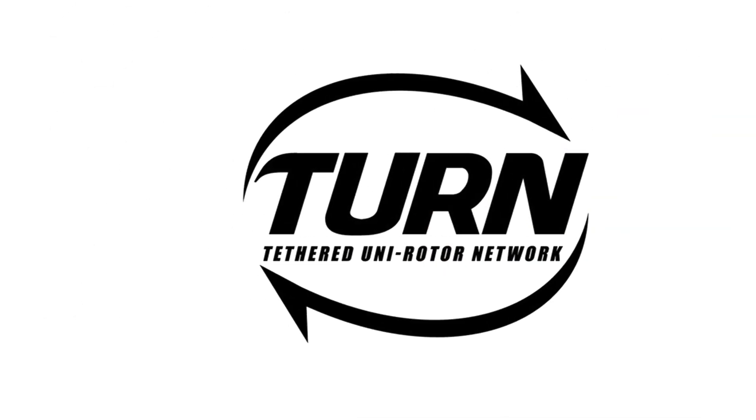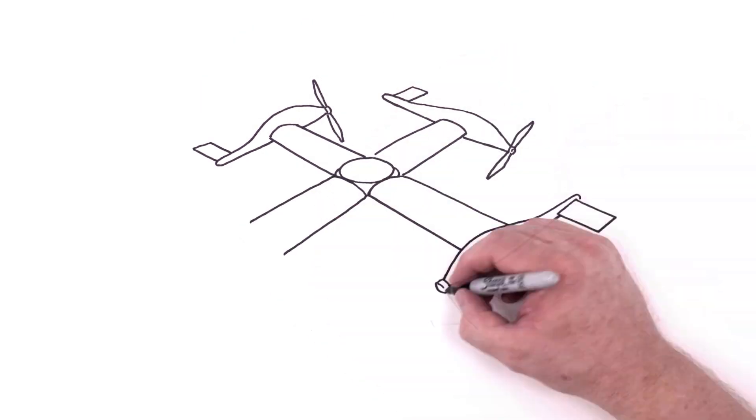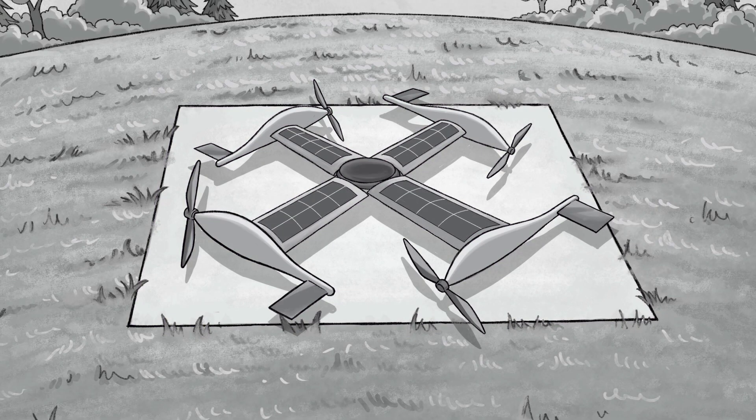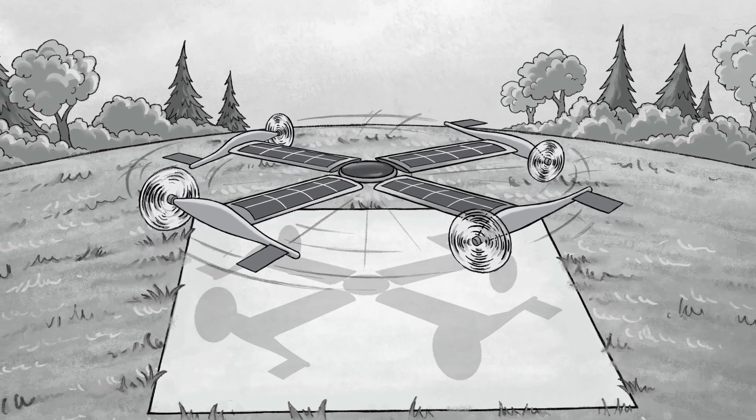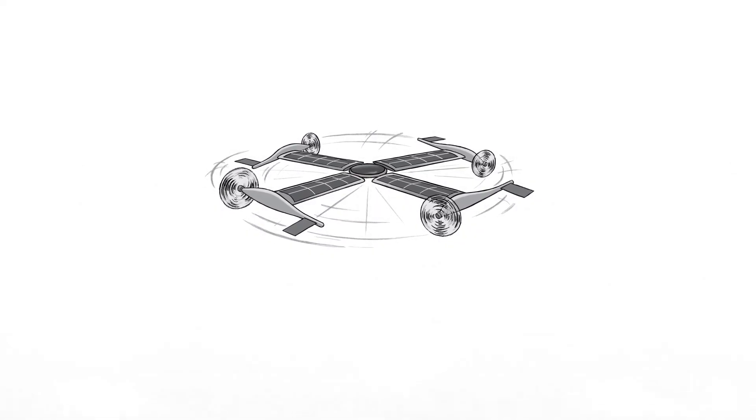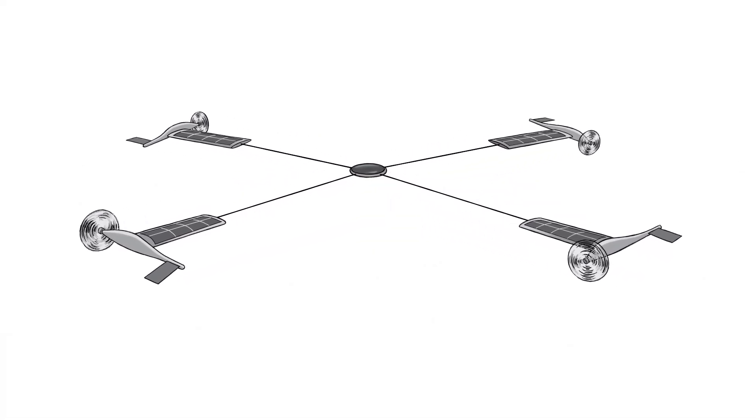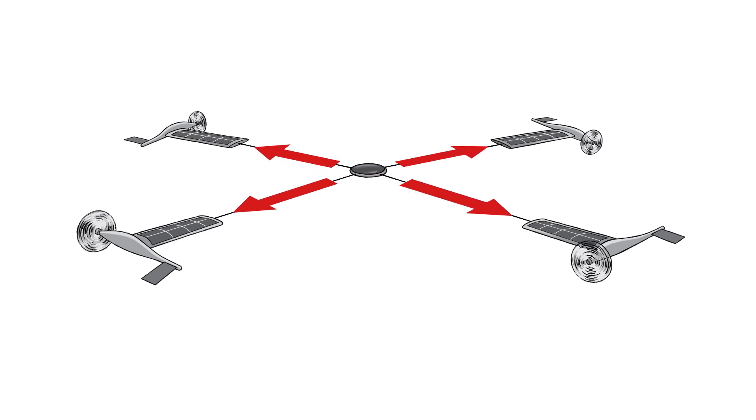TURN is a new aerial platform which combines the best features of both fixed-wing and rotorcraft designs. It takes off vertically and can hover, but a bulky helicopter is replaced with tethers, and it solves our engineering problem by placing the wings under tension.